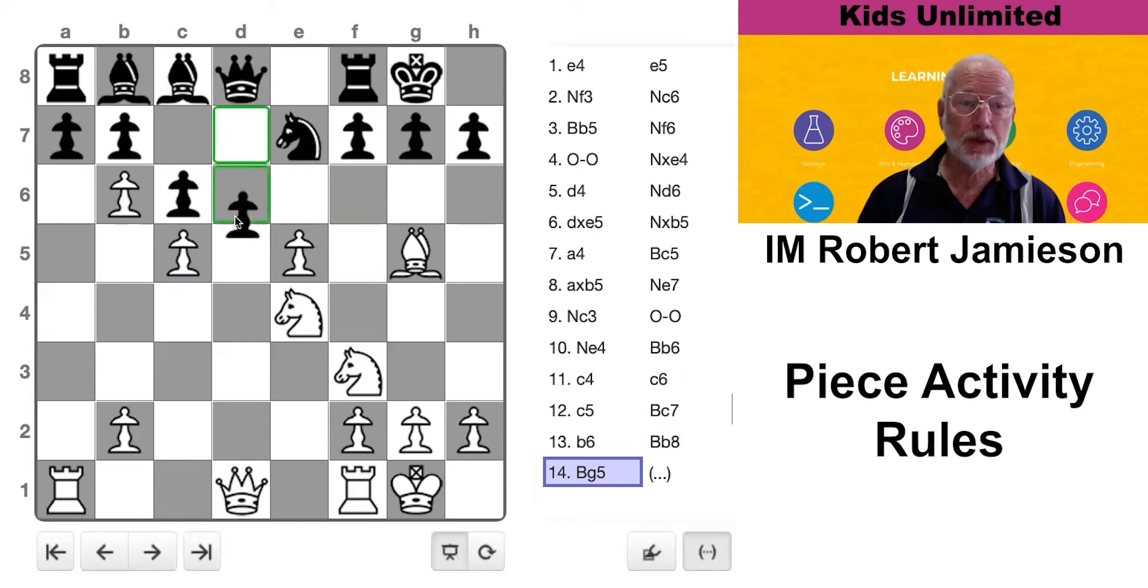Now he can't even play the freeing move d5, because obviously I en passant and the knight's going to be in trouble. All right, he says go away, bishop.